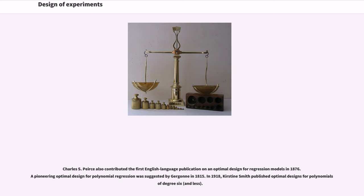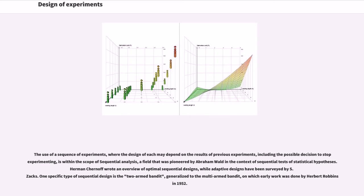In 1918, Kirstine Smith published optimal designs for polynomials of degree 6 and less. The use of a sequence of experiments, where the design of each may depend on the results of previous experiments, including the possible decision to stop experimenting, is within the scope of sequential analysis, a field that was pioneered by Abraham Wald in the context of sequential tests of statistical hypotheses. Herman Chernoff wrote an overview of optimal sequential designs, while adaptive designs have been surveyed by Zacks. One specific type of sequential design is the two-armed bandit, generalized to the multi-armed bandit, on which early work was done by Herbert Robbins in 1952.